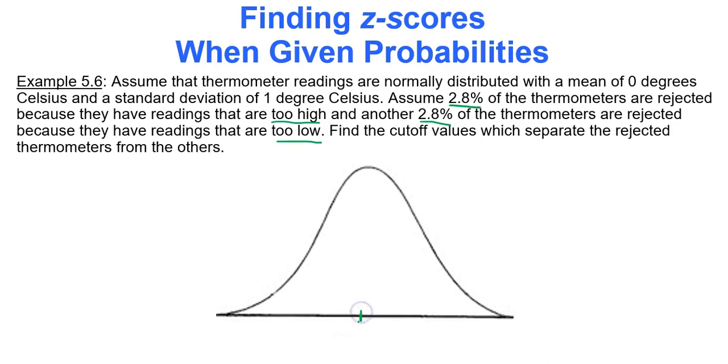Standard normal means my mean in the middle is 0. So I'm finding the data value that cuts off the bottom region of 0.028, that's 2.8%. And I'm trying to find the other data value that cuts off the upper region with an area of 0.028. So I'm looking for two values. Let's label them Z1 and Z2.